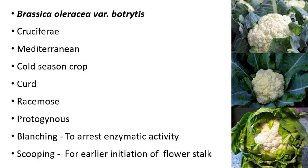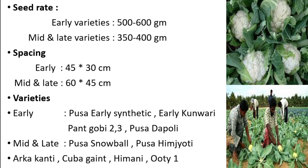Now let us see about seed rate. For early varieties, the seed rate required is 500 to 600 grams, and for mid and late varieties, seeds required are 350 to 400 grams. For spacing, early varieties require 45 x 30 centimeters and mid and late varieties require 60 x 45 centimeters.